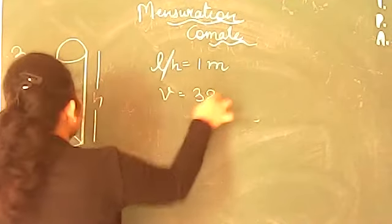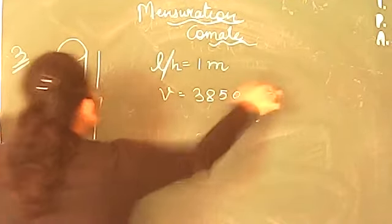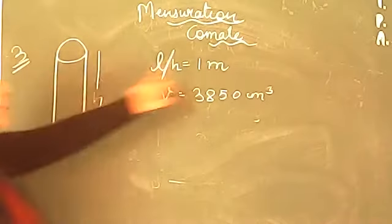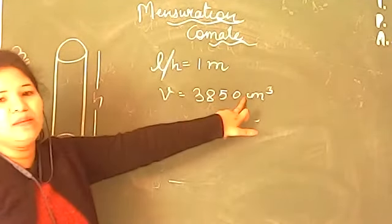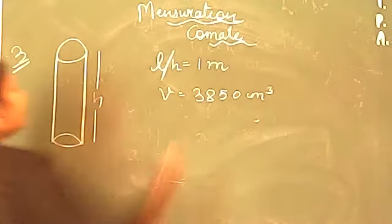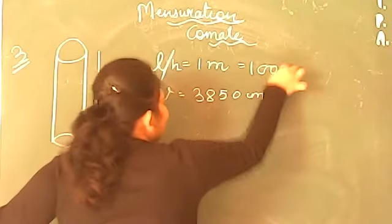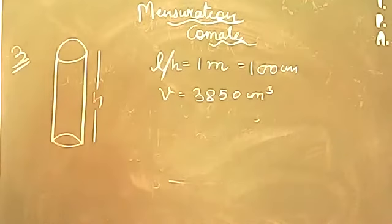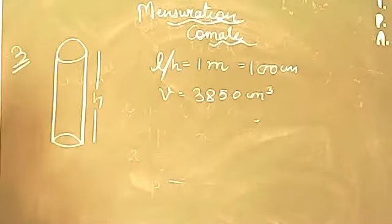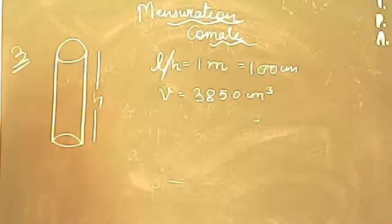The volume given is 3850 cm³. One dimension is given in meters and another in centimeters, so remember to convert both to common units. It is easier to convert meter to centimeter, so height becomes 100 cm. You have to find the diameter, which requires finding the radius first using the volume formula, then doubling it to get diameter.